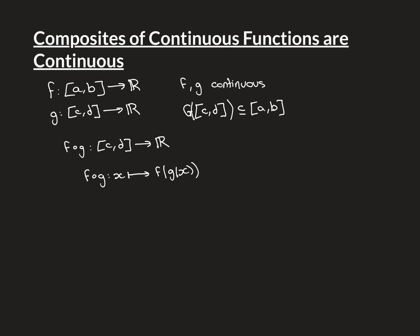This composite function takes any x in [c, d] and maps it to f(g(x)): first ask what g maps x onto, then put that into f to get a real number. The claim is that because f and g are both continuous on their entire domains, this composite function f∘g is also continuous over its entire domain.